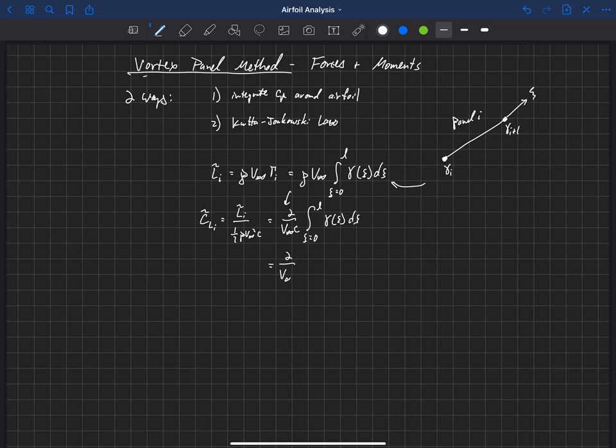like I said, we assumed a linear variation, and so we can plug that in inside of that integral. So we have 2 V infinity C times the integral from xi equals 0 to L of, and now we're just going to put in that linear variation, which would be gamma of i plus gamma of i plus 1 minus gamma of i over Li. So that's the slope of the increase in vorticity and multiplied by xi. And we're going to integrate that over d xi. And so once we do that,